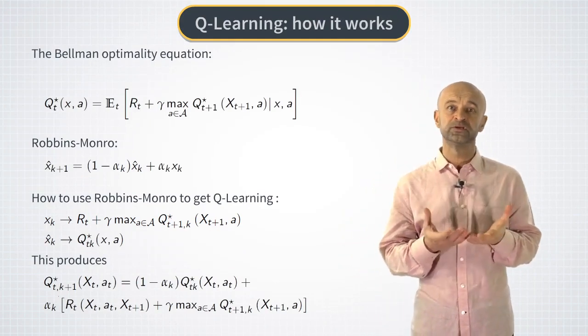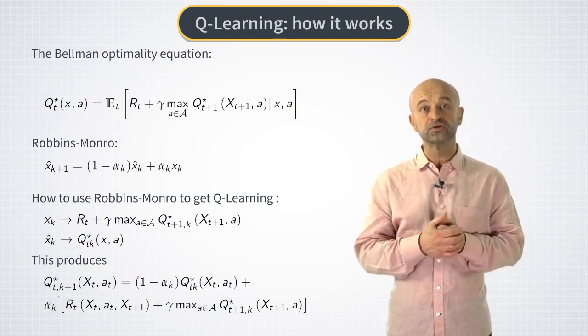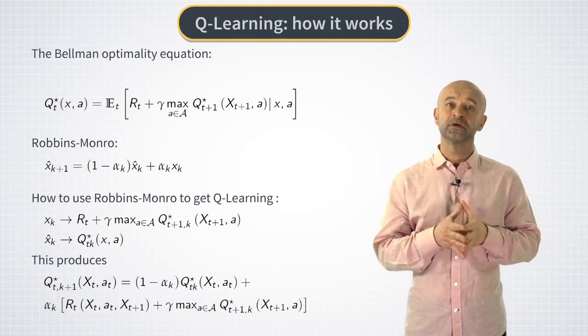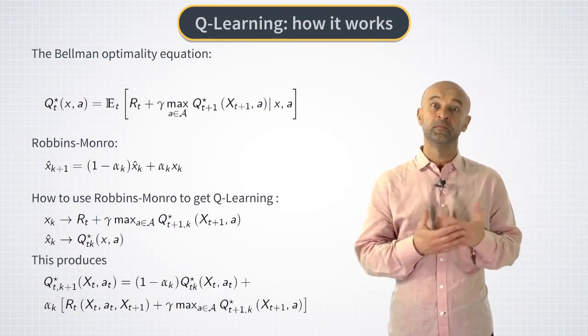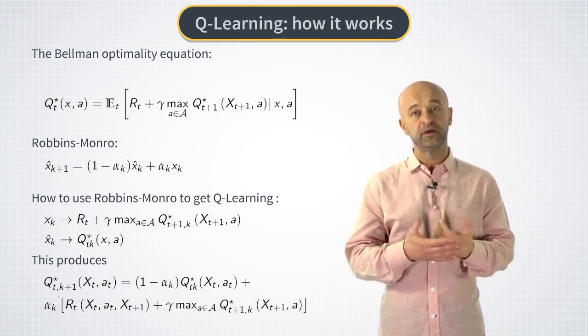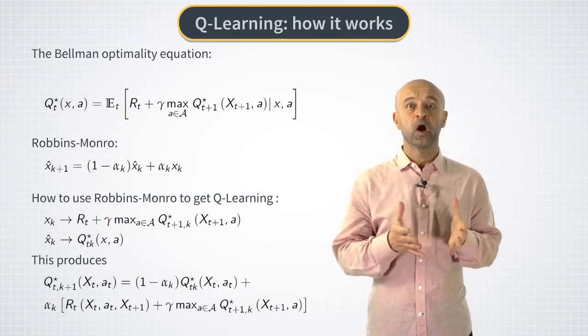And the reason for this is that optimal hedges are obtained using cross-sectional information across all Monte Carlo paths. But such cross-sectional information would be masked by any online method of updating Q values and optimal hedge ratios.